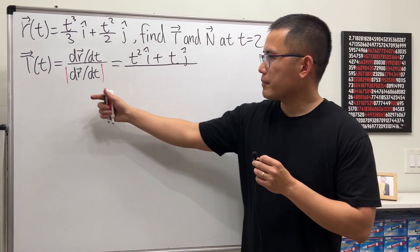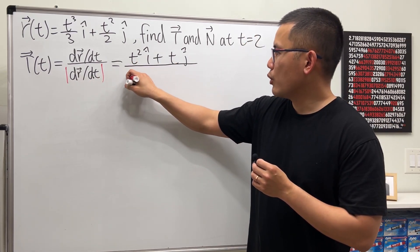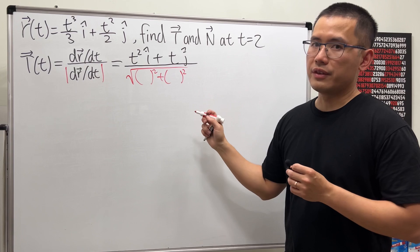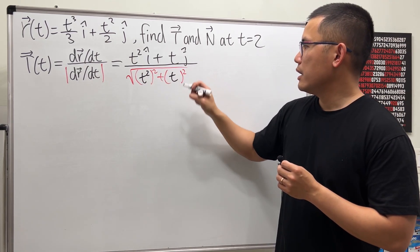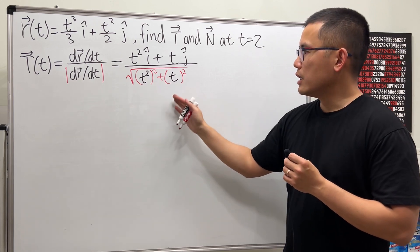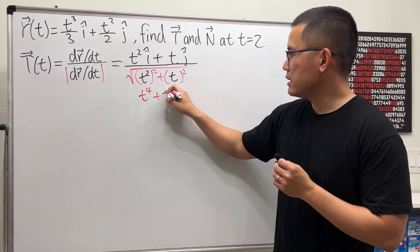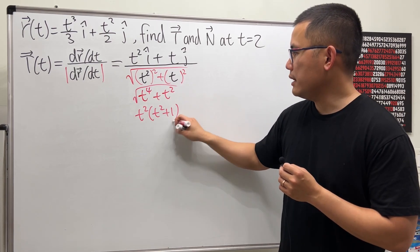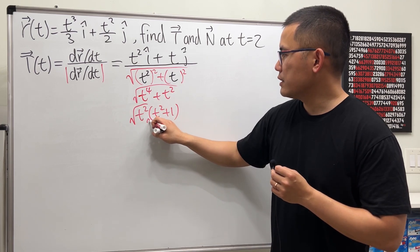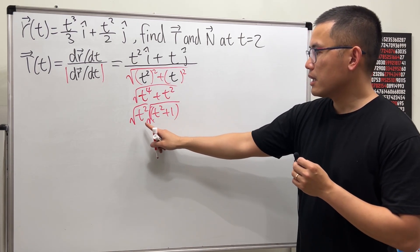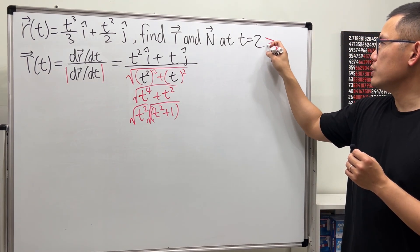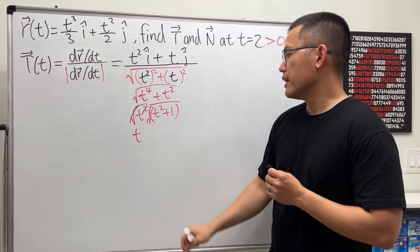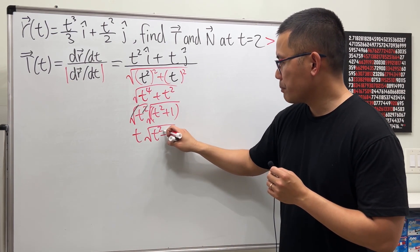Now divide by the magnitude: open the square root, square the first component and add it with the square of the second component. We can simplify because t to the fourth plus t squared — factor out t squared — gives t squared times (t squared plus 1). We take the square root of each factor. Because t equals 2 is greater than 0, the square root of t squared is just t. So the denominator becomes t times the square root of t squared plus 1.